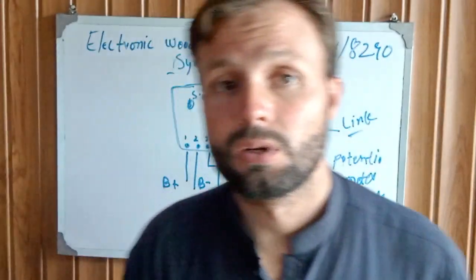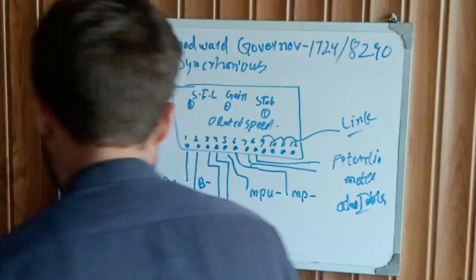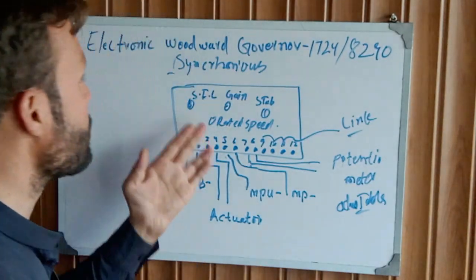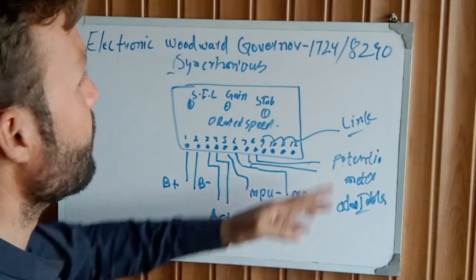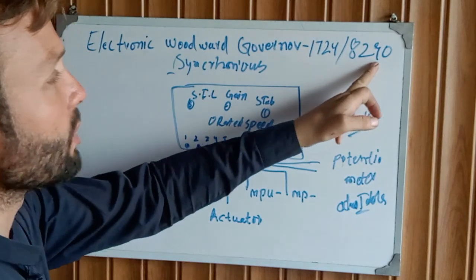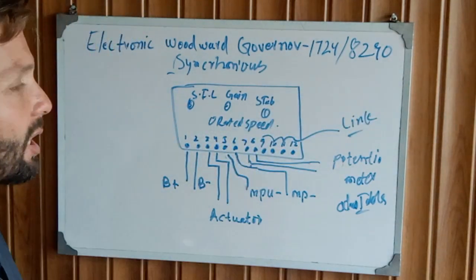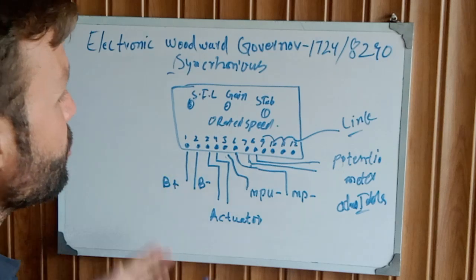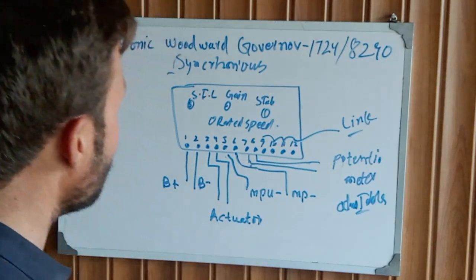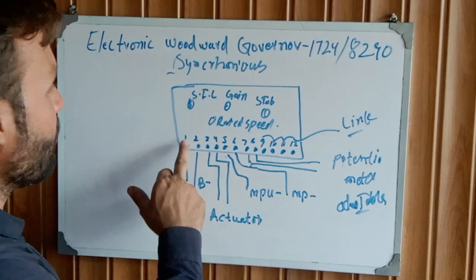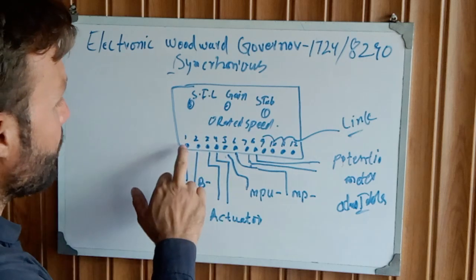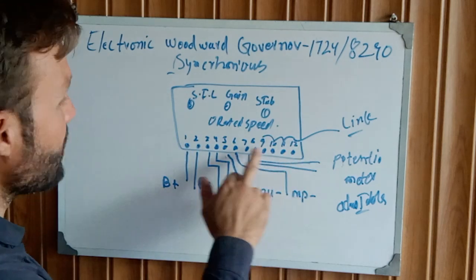Let's get started. This is the electronic fuel governor model parts number 8290. This is the governor and this is the diagram. Let me explain how to debug and install this governor. This governor has on the bottom side 12 terminals - you can see here 1 to 12.